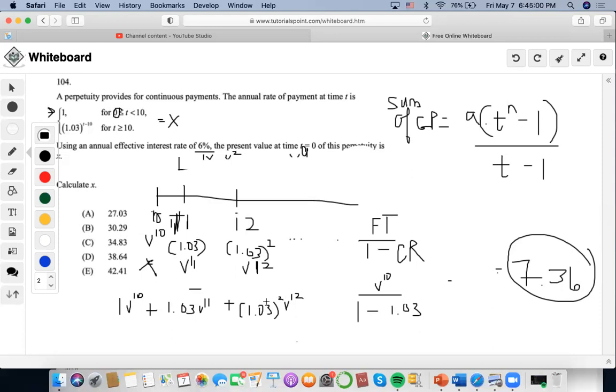What is the common ratio in this case? It is 1.03 v. If I were to take 1.03 squared v to the 12 over 1.03 v to the 11, this would just be 1.03 v. Now let's solve this. I'm going to take my 6% effective to the negative 10th power. I'm going to get 0.558394.